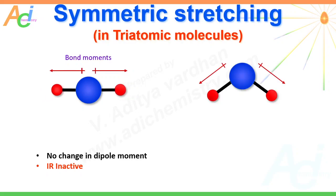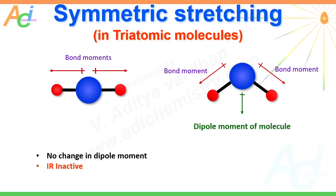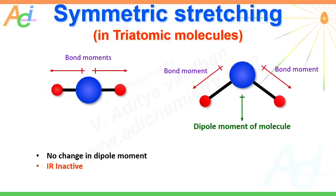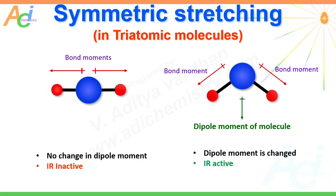Now let us see symmetrical stretching in non-linear triatomic molecules. Even though the bonds are the same, since they make angles with each other, the molecule has a net dipole moment, shown with a green arrow. In symmetrical stretching both bonds vibrate at the same time and to the same extent. However, the net dipole moment is altered during this vibration, hence this vibration is IR active.